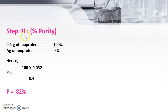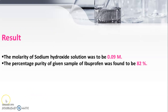Next, we calculate the percentage purity. For 0.4 gram of ibuprofen taken in the procedure, that is considered 100%. The formula gives: 100 × 0.032 ÷ 0.4, and we get the percentage purity. So our assay result is 82%. The result: the molarity of sodium hydroxide solution was found to be 0.09 molar, and the percentage purity of the given sample of ibuprofen was found to be 82%.